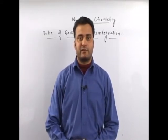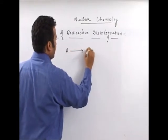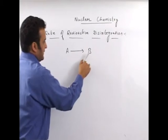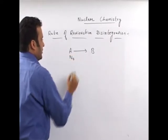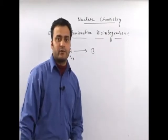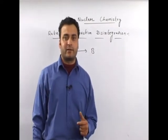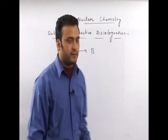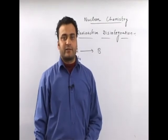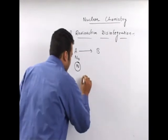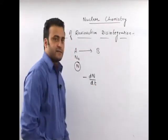We will derive the formula on the basis of first-order kinetics. Consider a radioactive substance A getting disintegrated into B. A is the parent nuclide and B is the daughter nucleus. At T equal to 0, the number of atoms of A present are equal to N naught. At any time T, the number of atoms present are equal to N. The rate of radioactive disintegration is represented by minus dN upon dt.